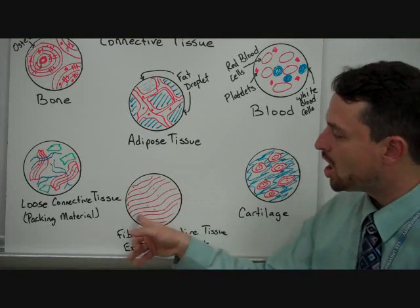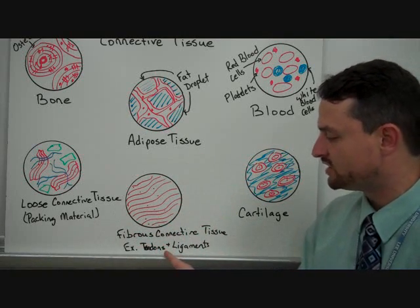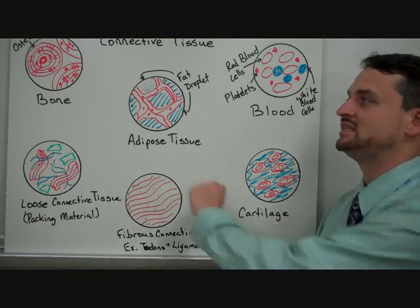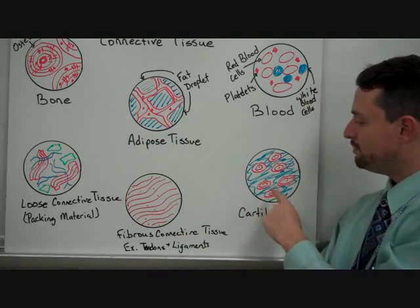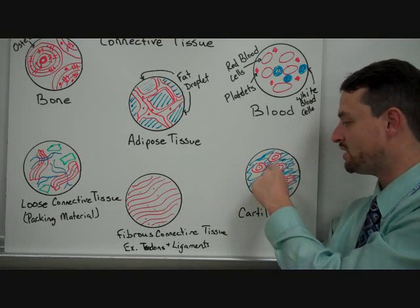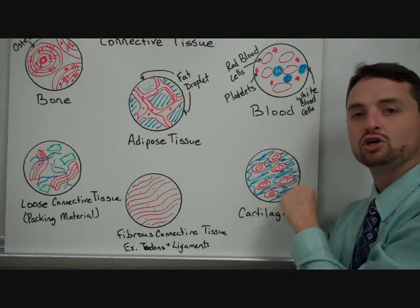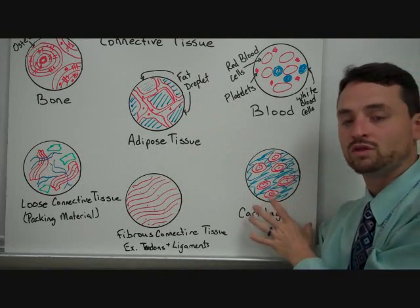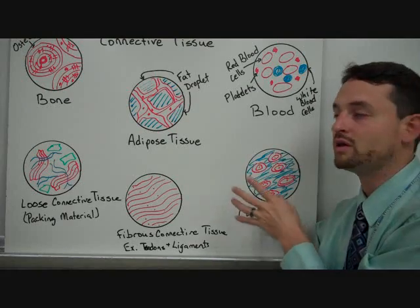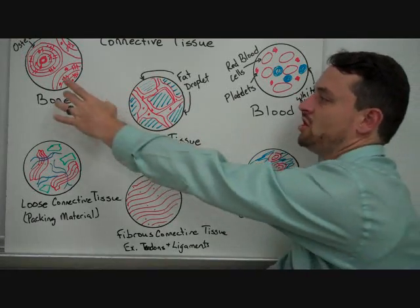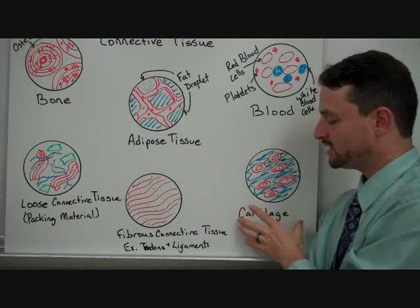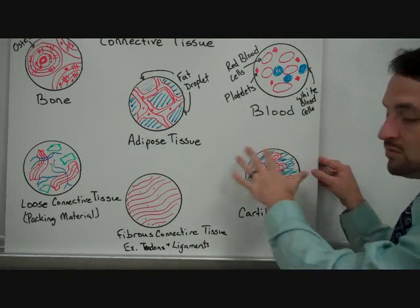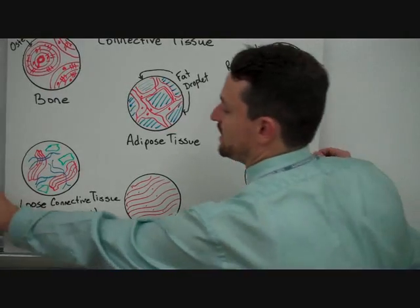Fibrous connective tissue consists of long strands of cells — this is what you see in tendons and ligaments. And then cartilage, which is very similar to bone in style but doesn't have those hardened rings. It does have cells that look like they could be hardening, and in some areas, as a baby you're born with cartilage that will harden into bones as you develop. The cartilage also provides cushioning in between joints, so there is some space around those cells for that.